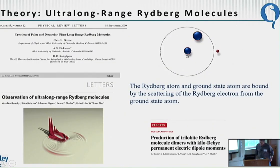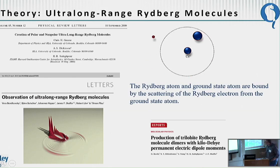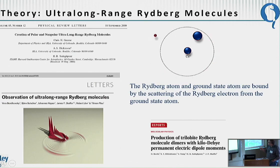The simple picture of these ultra-long-range Rydberg molecules is depicted here in this little cartoon. The idea is that if you put a ground state atom within the orbital of the Rydberg electron, it will interact with that atom. It will basically scatter off the atom, spend a little bit more time there, and that will lead to some binding energy as long as the scattering length between the electron and the ground state atom is negative.